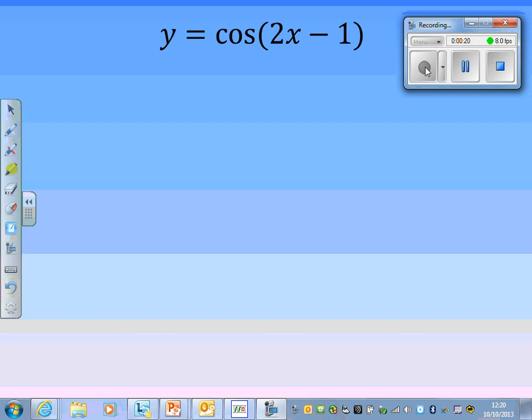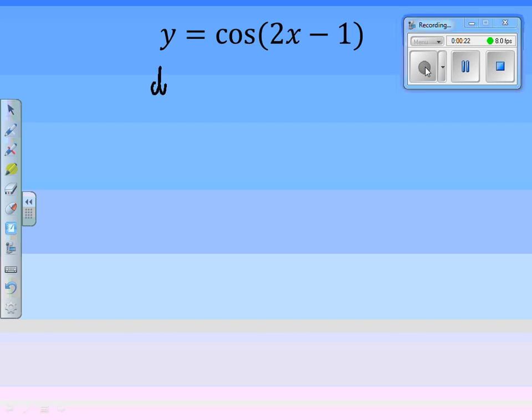So first of all, to find the stationary points, we have to differentiate. dy/dx is equal to what? How do we differentiate cos of 2x minus 1? Steph? Minus sine 2x minus 1. Yes.